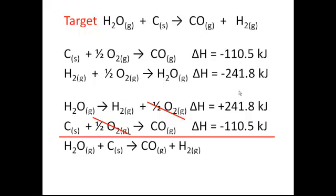We also have to add up our delta Hs. A positive 241.8 kilojoules minus 110.5 kilojoules is going to give us a positive 131.3 kilojoules.